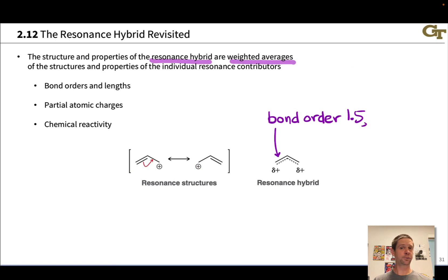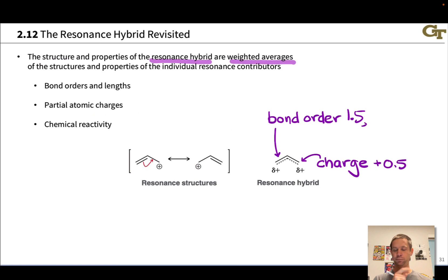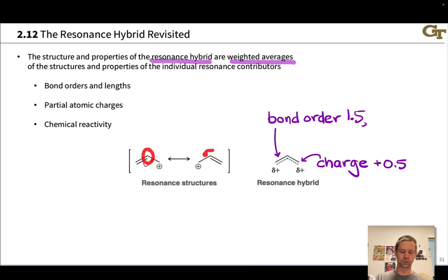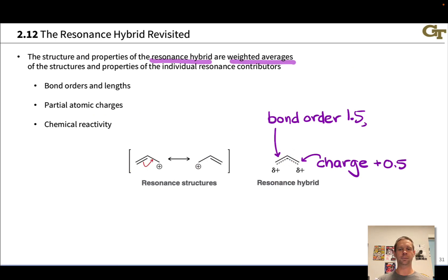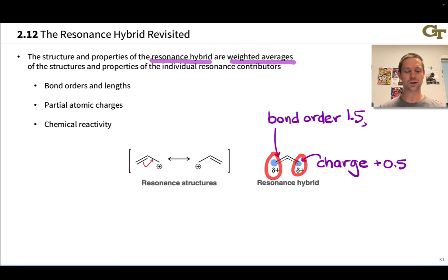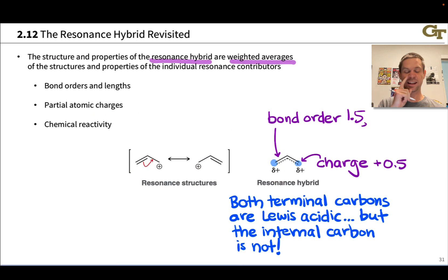The resonance forms tell us the charge is 50% on one terminal carbon and 50% on the other. Since the total charge is plus one, we have a charge of plus 0.5 on each end. The central carbon in both structures is neutral — it does not share the positive charge; only the two end carbons do. From a reactivity point of view, the two terminal carbons in allyl cation are the Lewis acidic carbons, sharing the bulk of the positive charge.